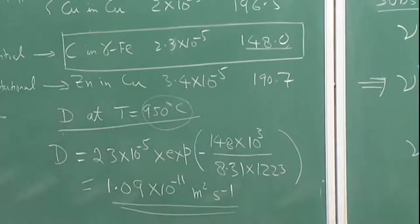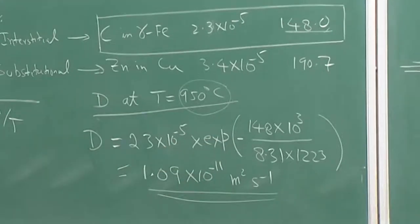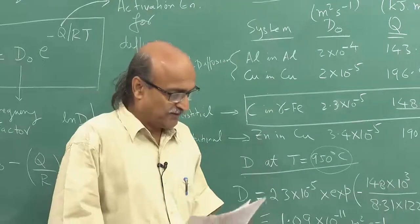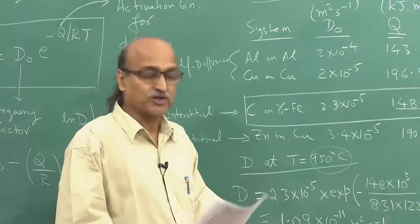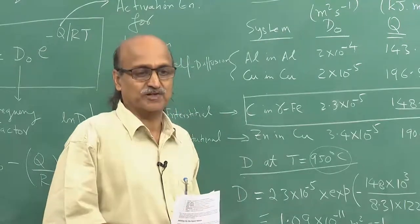As temperature increases, the diffusion coefficient increases and diffusion becomes faster; as temperature decreases, D decreases and diffusion is slower. This brings us to the close of this lecture. In the next — and concluding — lecture of this course, we will apply the fundamentals we have covered. Thank you.